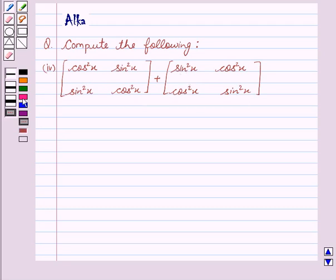Now let's start with the solution. We add the corresponding elements of the given matrices. This will give us cos square x plus sin square x.